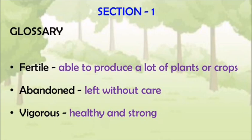Now we move on to the first section: glossary. Today you are going to write this glossary two times. The first one is 'fertile.' Fertile means able to produce a lot of plants and crops — that is, it can produce more plants and it can produce more crops.